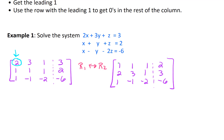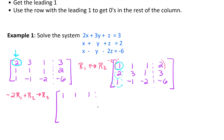Now in our first column we've got a leading one right where we want it in the first row, first column position. Next, we want to use that leading one to knock out the rest of the entries in that column — we want zeros there. So let's multiply negative two times row one and add that to row two, putting the result in row two. That gives us zero in the first position, then negative two times one plus three is one, negative two plus one is negative one, and negative four plus three is negative one.